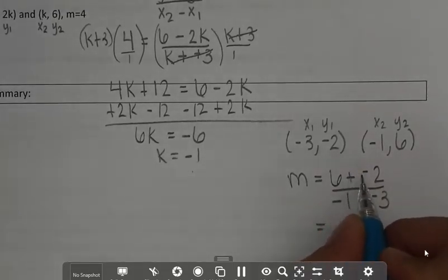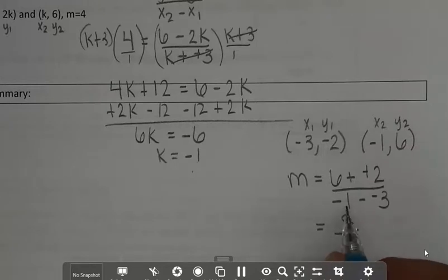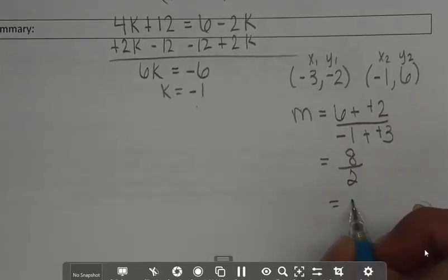All right, so 6 plus 2 gives me 8, and then negative 1 plus 3 gives you 2, and that gives you a slope of 4.